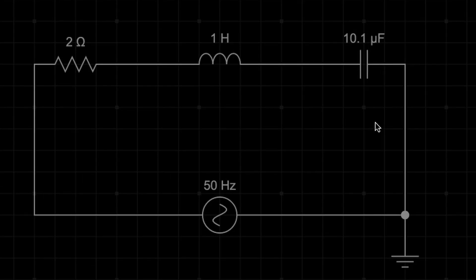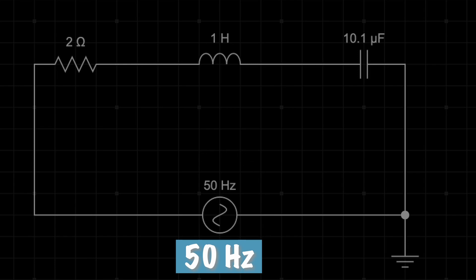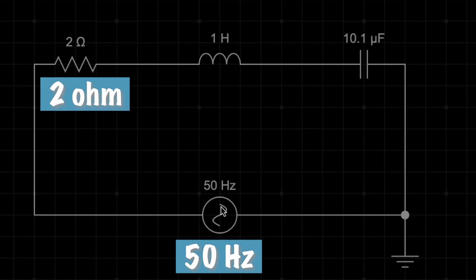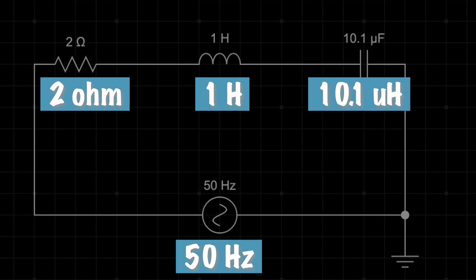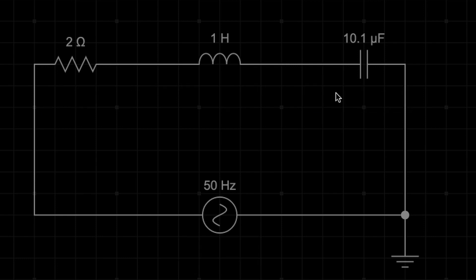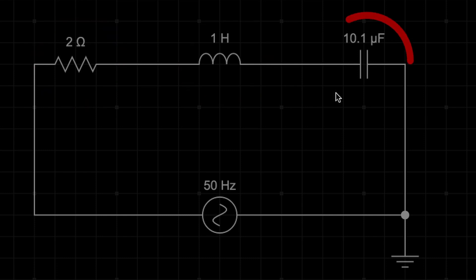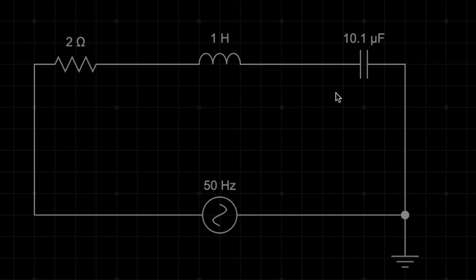Here is our simple circuit. We have a 230 volt AC supply, 50 hertz is the frequency. We have connected it to a 2 ohm resistance in series with a 1 henry inductor, which is in series with a 10.1 microfarad capacitor. Now this circuit has resistance, it has inductance, it also has capacitance.